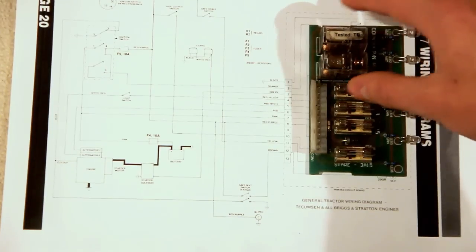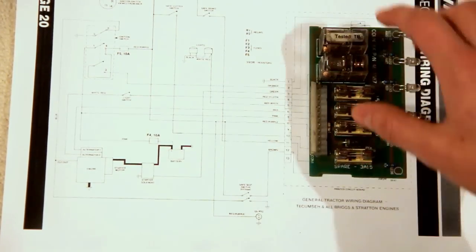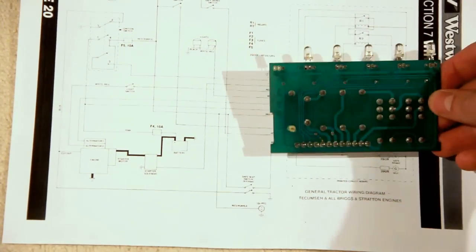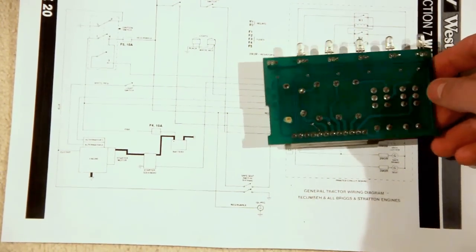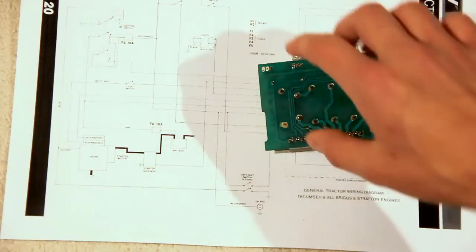Now each of those numbers is a different pin on here, and each pin goes through a different circuit on the back of here. You might be able to see the different circuits going from each pin, and they all have their own different jobs.